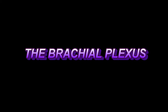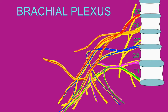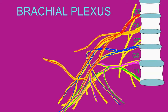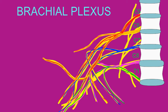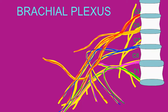The ventral rami of spinal nerves C5 through T1 do not directly innervate muscles, nor do they directly provide sensation to the skin. Instead, they interweave to form a brachial plexus. From this plexus come the nerves which do innervate these muscles and skin regions.